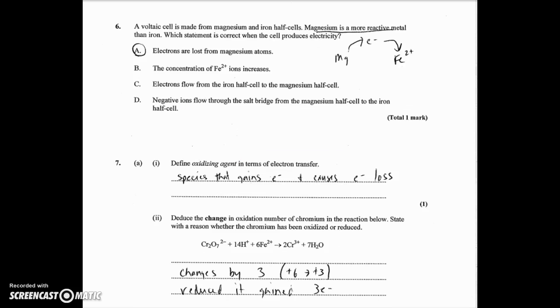Number 3 says a voltaic cell is made from magnesium and iron half cells. Magnesium is a more reactive metal than iron, so that means magnesium is going to lose electrons, and that means iron ion has to gain electrons. So when you look at these statements, electrons are lost from magnesium atoms. That's true. Concentration of Fe2+ increases. That can't be true because they're going to be gaining the electrons over here to form iron, whereas here we're going to be forming magnesium ion and losing those electrons. Electrons flow from the iron half cell to the magnesium. That's just the opposite. And negative ions flow through the salt bridge. Now the salt bridge is always the tricky one, but remember, over here, the cations are being removed, so the cations are going to flow this way. And over here, the electrons are being sent across, so the anions are going to flow this way. So it says negative ions flow through the salt bridge from the magnesium to the iron. That's just the reverse of what it should be.